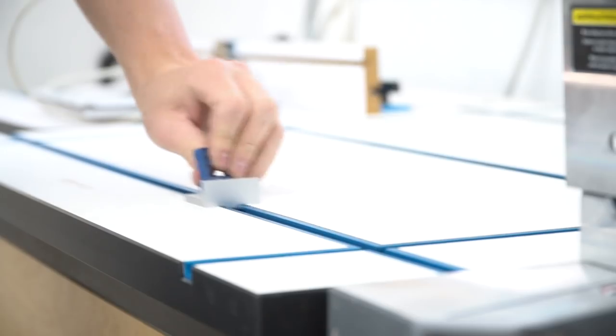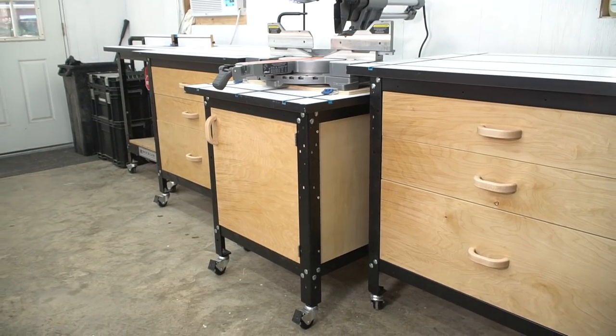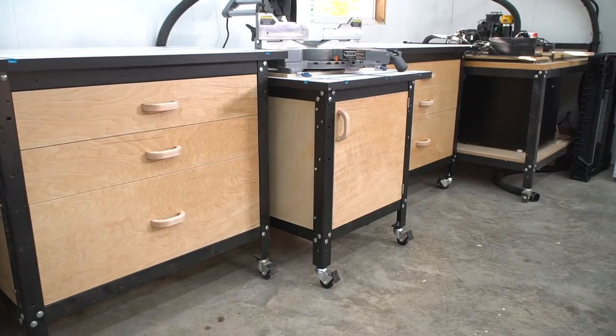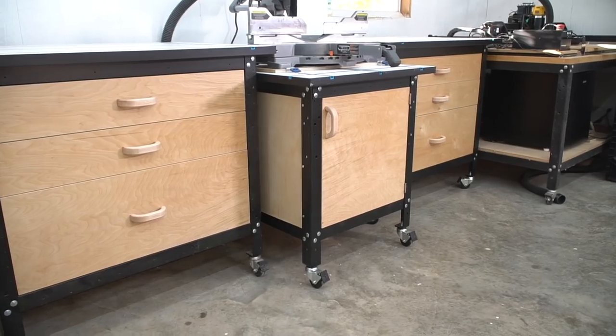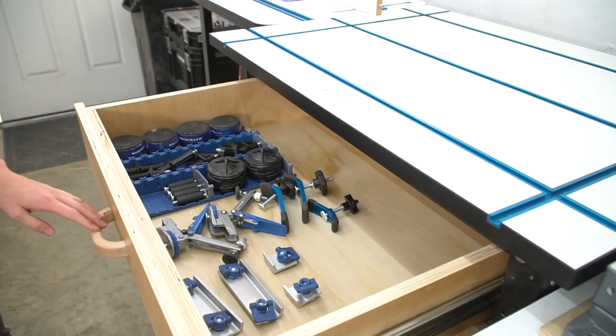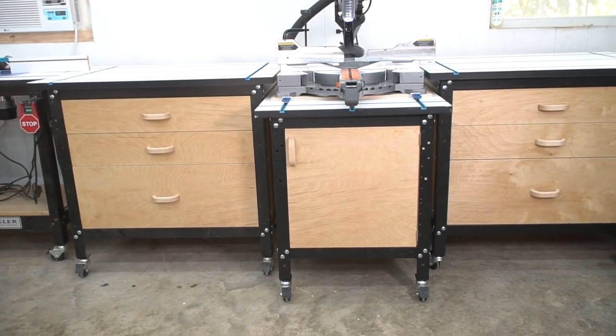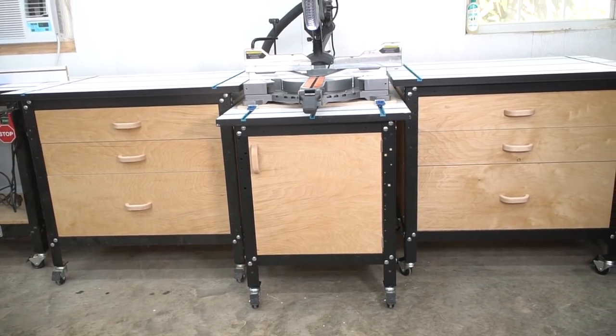One quick and easy way to make repeatable cuts is by using a t-track stop, but there are literally so many ways to upgrade this stand. You could make adjustable fences with measuring tapes, flip stops, and so much more. We haven't decided what all we want to do with this, so leave a comment below with your ideas and maybe we'll implement them in a future video.